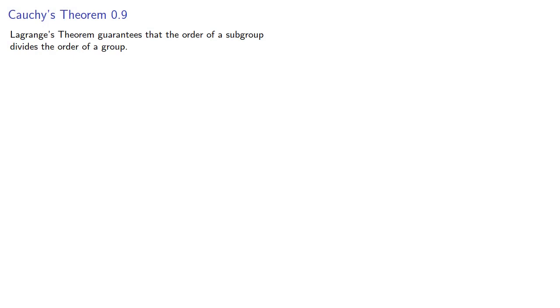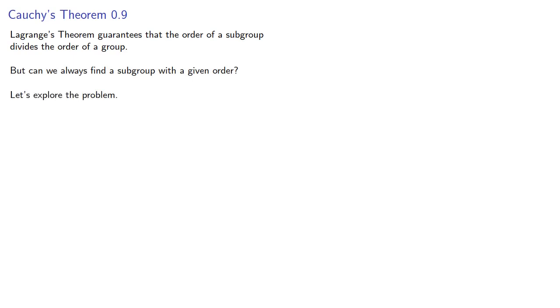Lagrange's theorem guarantees that the order of a subgroup divides the order of a group. But can we always find a subgroup with a given order? Well, let's explore.